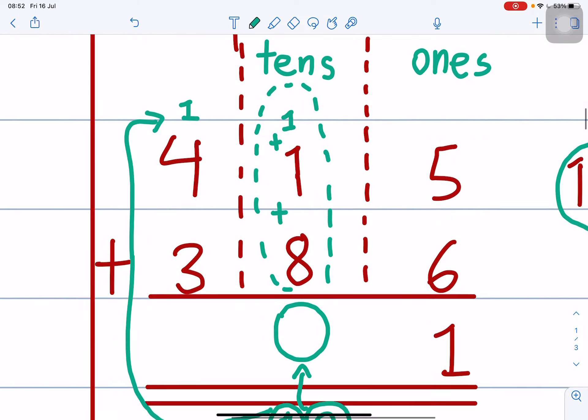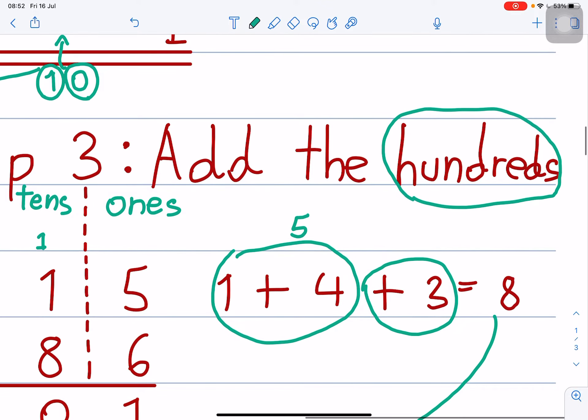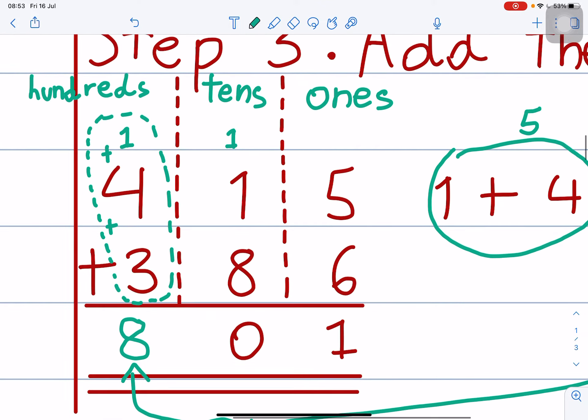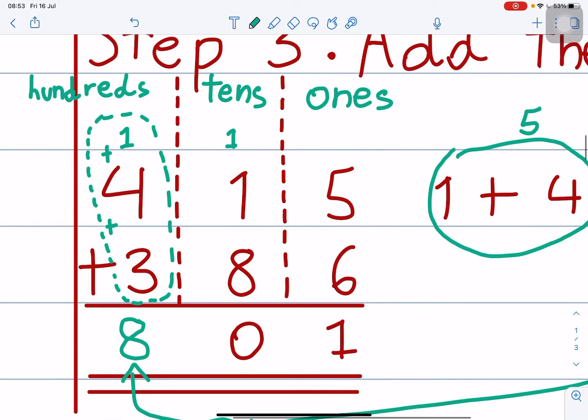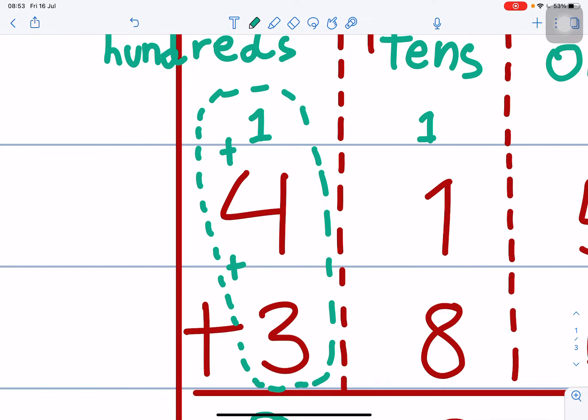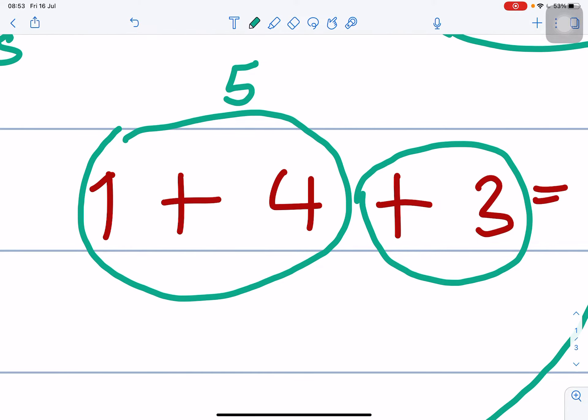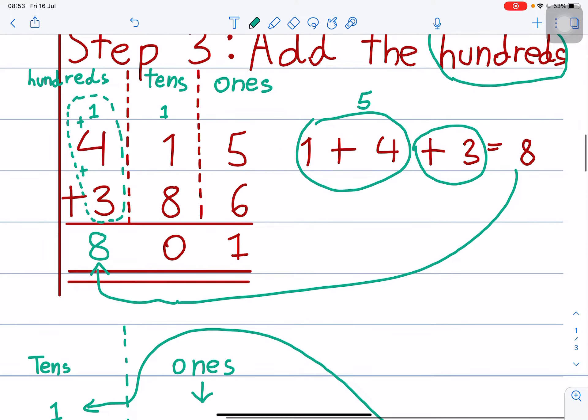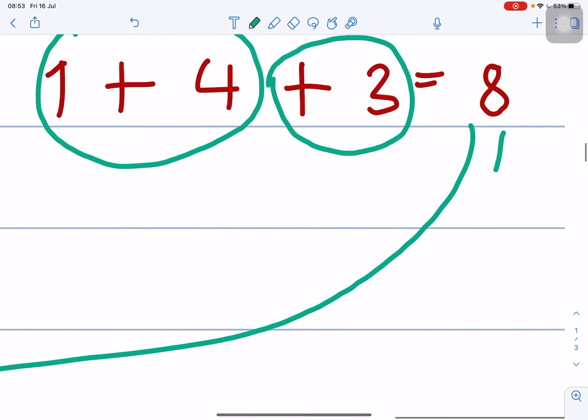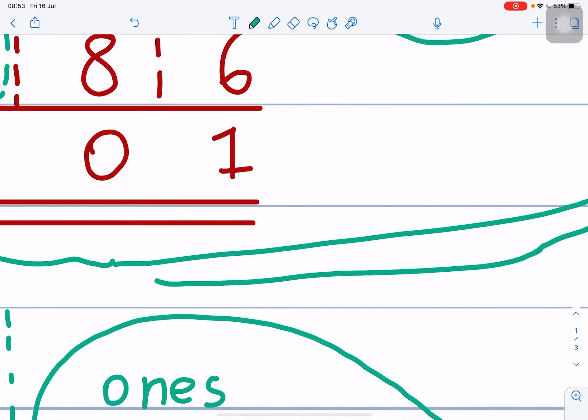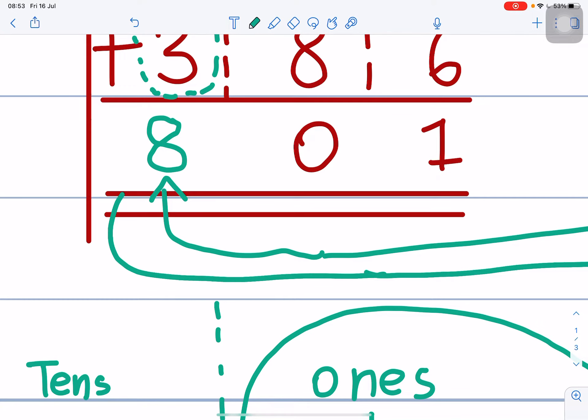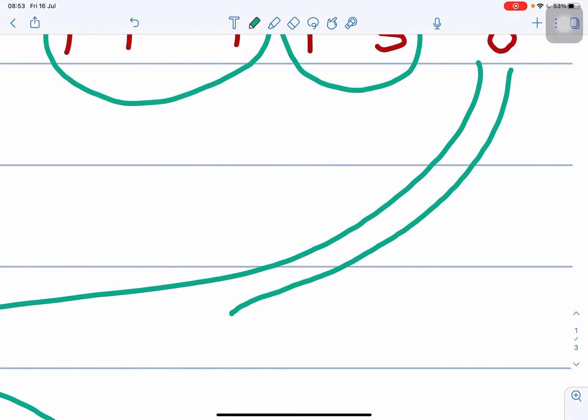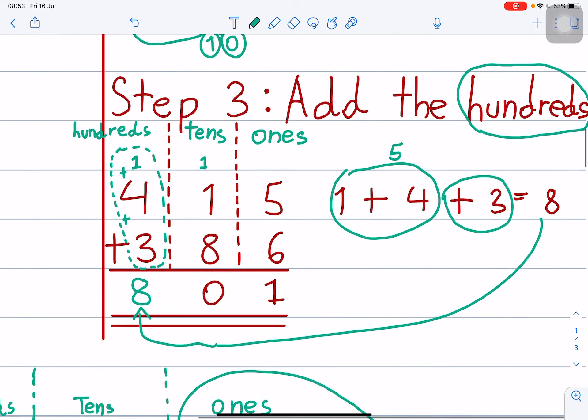Step two finished. Then now you move on to step three. Step three: add the hundreds. So again, add the hundreds is over here. 1 plus 4 plus 3 equals 8. Number 8, easy, you just copy. So that's it.